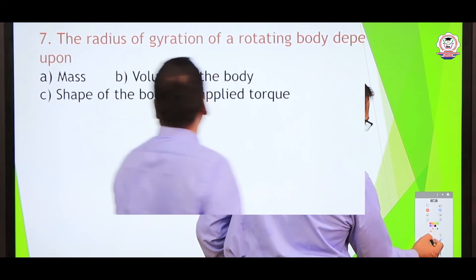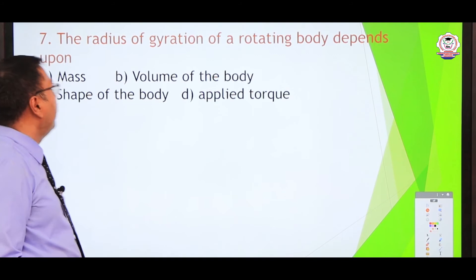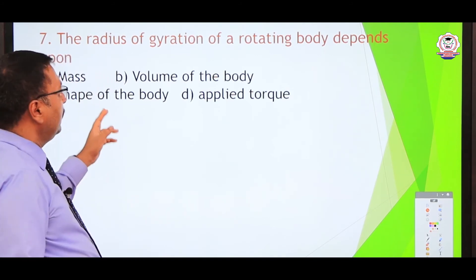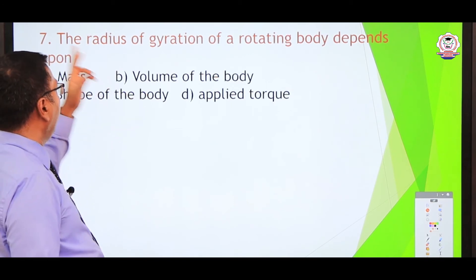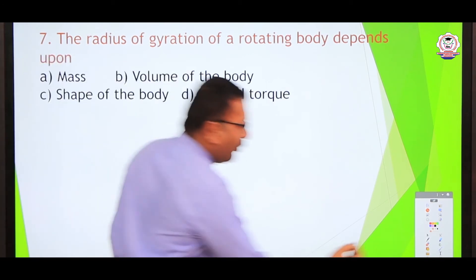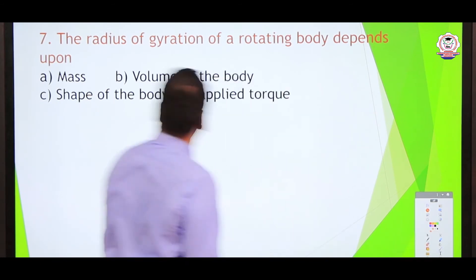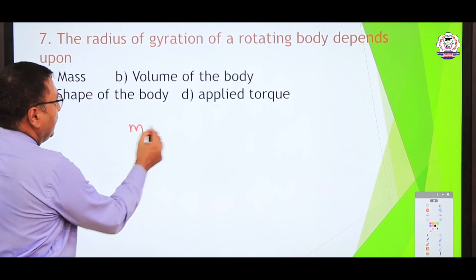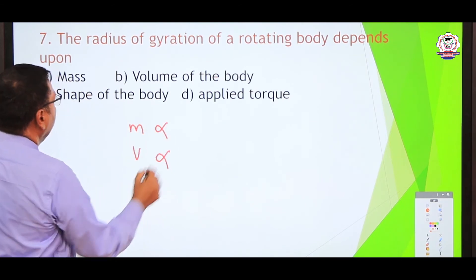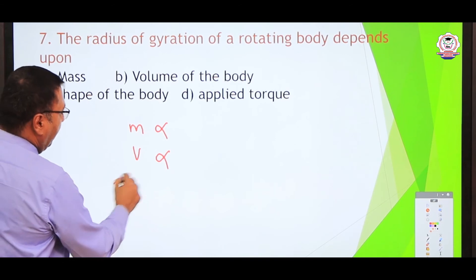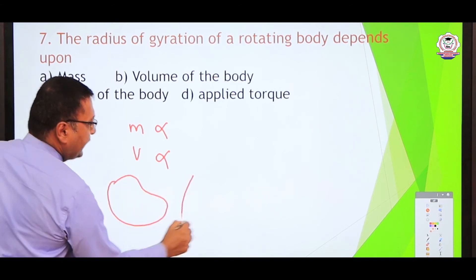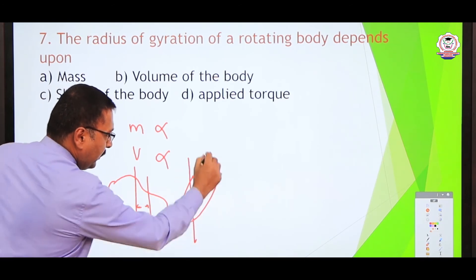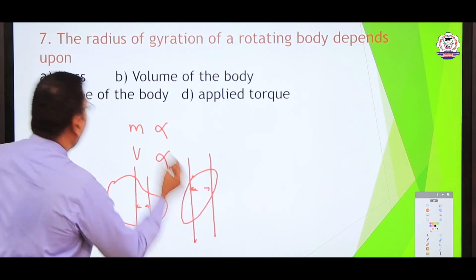The radius of gyration of a rotating body depends upon which of the following: shape of the body, volume, mass, or applied torque? Mass and volume are not the determining factors. The shape of the body matters — if the shape changes, the radius of gyration changes. So the answer is shape of the body.